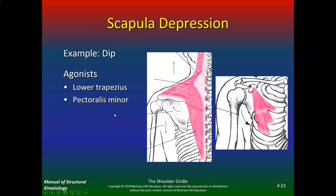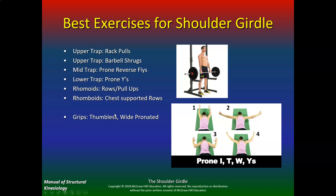EMG studies have limitations, mostly limited participants, but here are the best exercises for each muscle. For upper trap: rack pulls and barbell shrugs. Middle trap: prone reverse flies. Lower trap: prone Y's. Rhomboids: rows, pull-ups, and chest-supported rows. The best grip for shoulder girdle work seems to be a thumbless, wide, pronated grip.